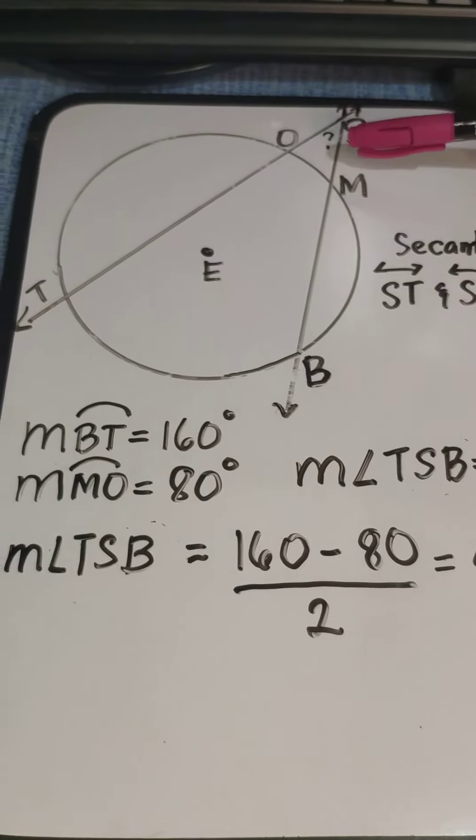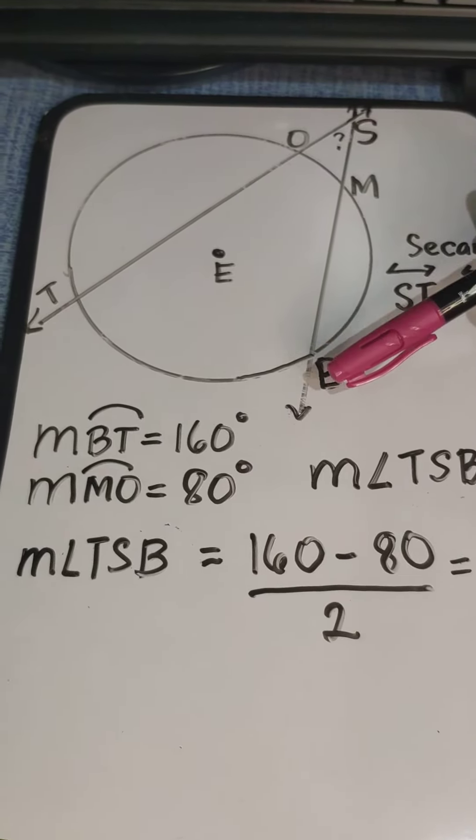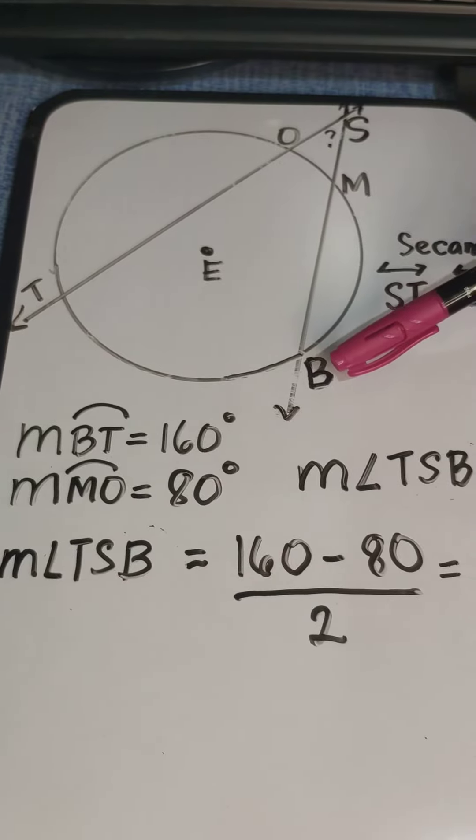This is line SB. Line SB is also a secant line because it intersects circle E at two points, point M and point B.